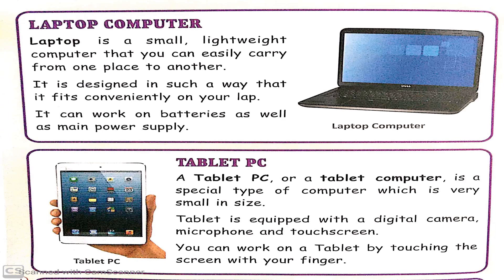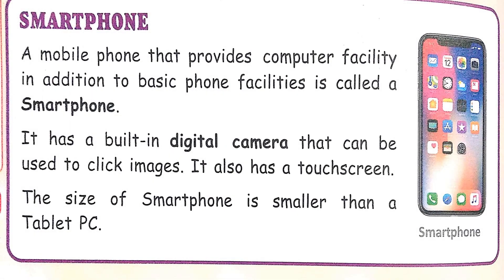Next is the tablet PC. A tablet PC is again smaller than the laptop. Here you have a touch screen — you use it with your fingers. There is no keyboard and mouse to operate it; you operate it using your fingers only. It is similar to your smartphone. Here you have a digital camera, you can take pictures, and you have a microphone so you can record your voice.